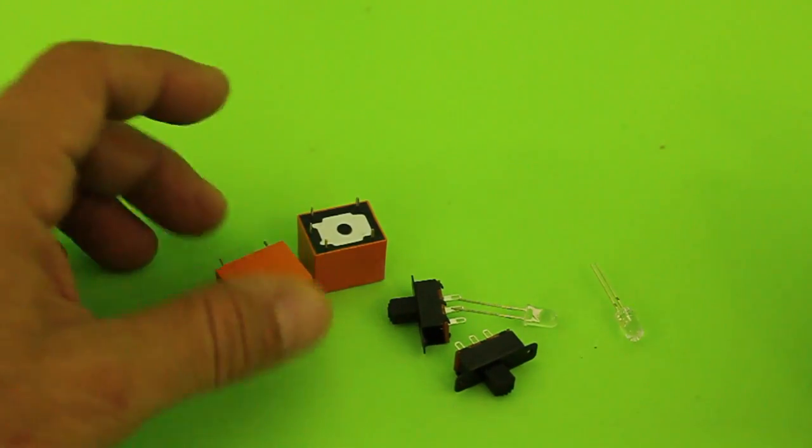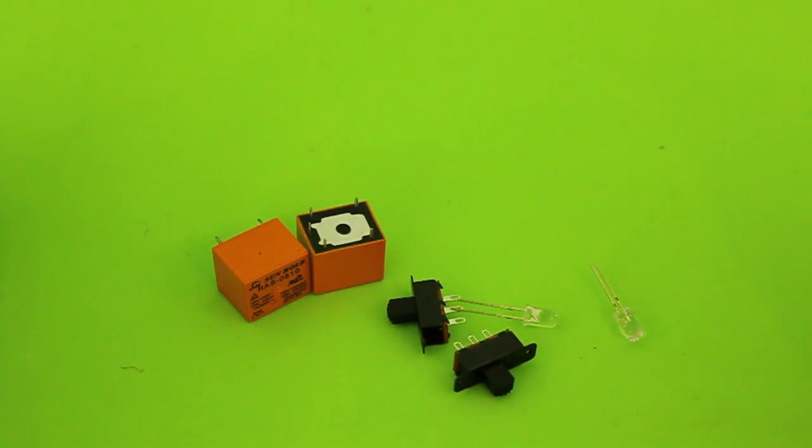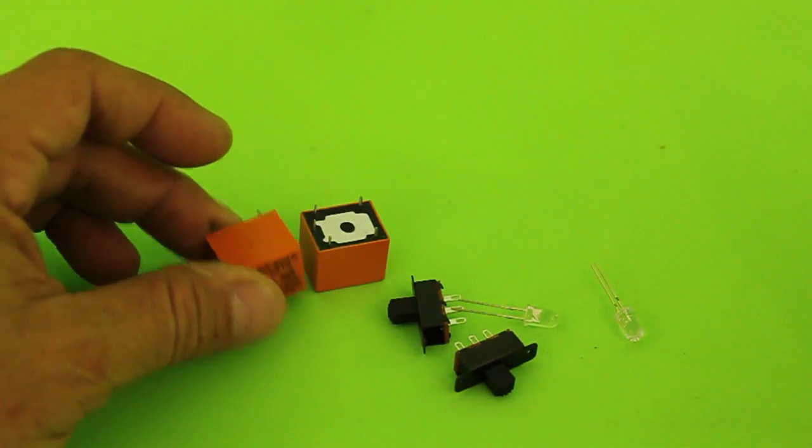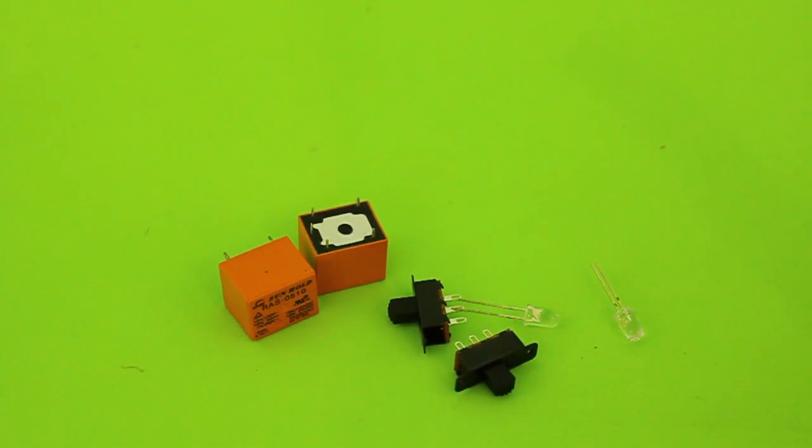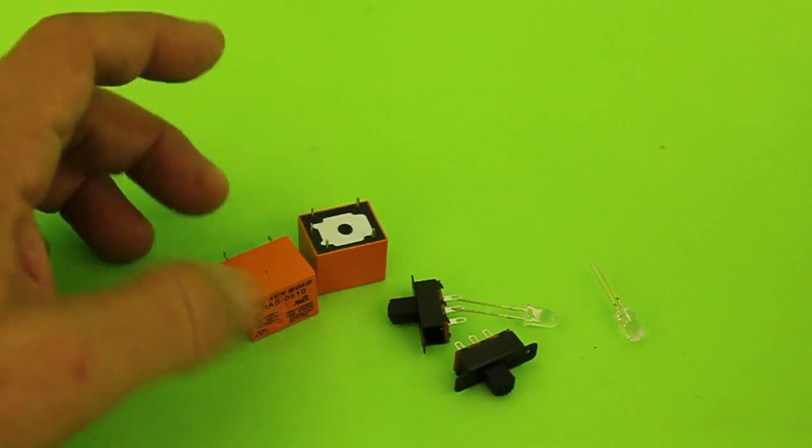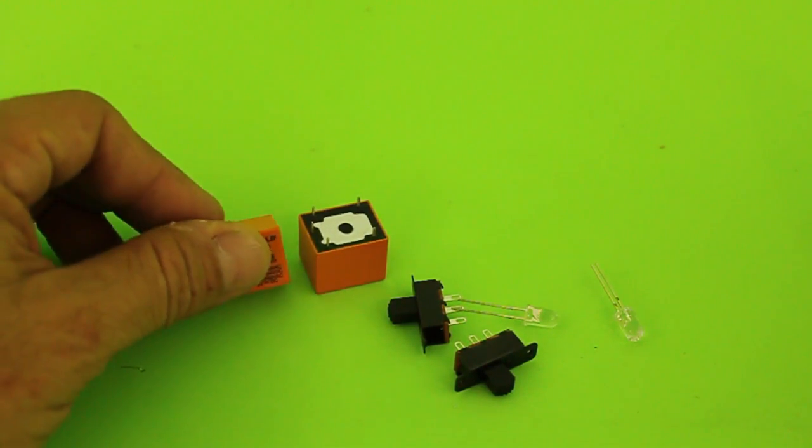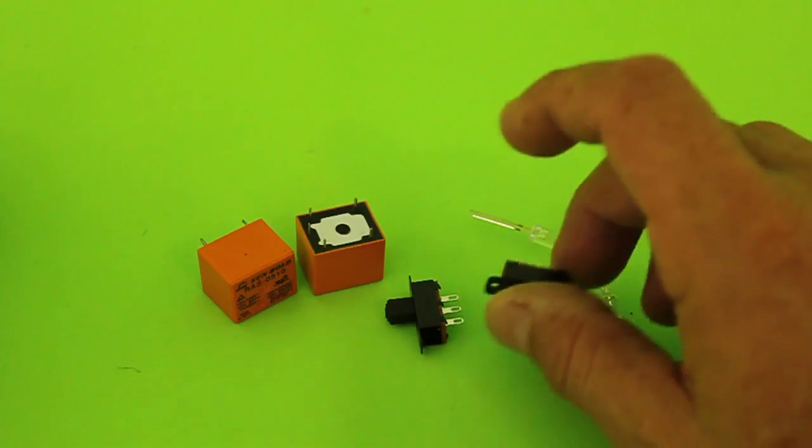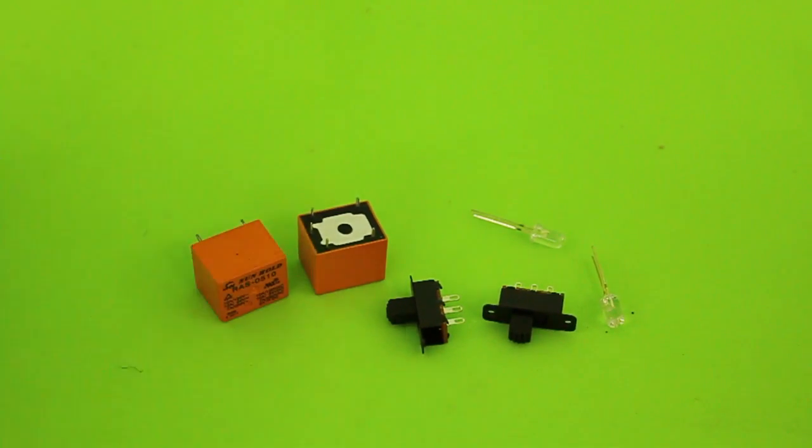There are many ways to make the logic gates and one of them is using relays. In fact the first computers that were invented use these electromechanical devices, relays. So I will be using LEDs, switches and relays to build the logic gate.